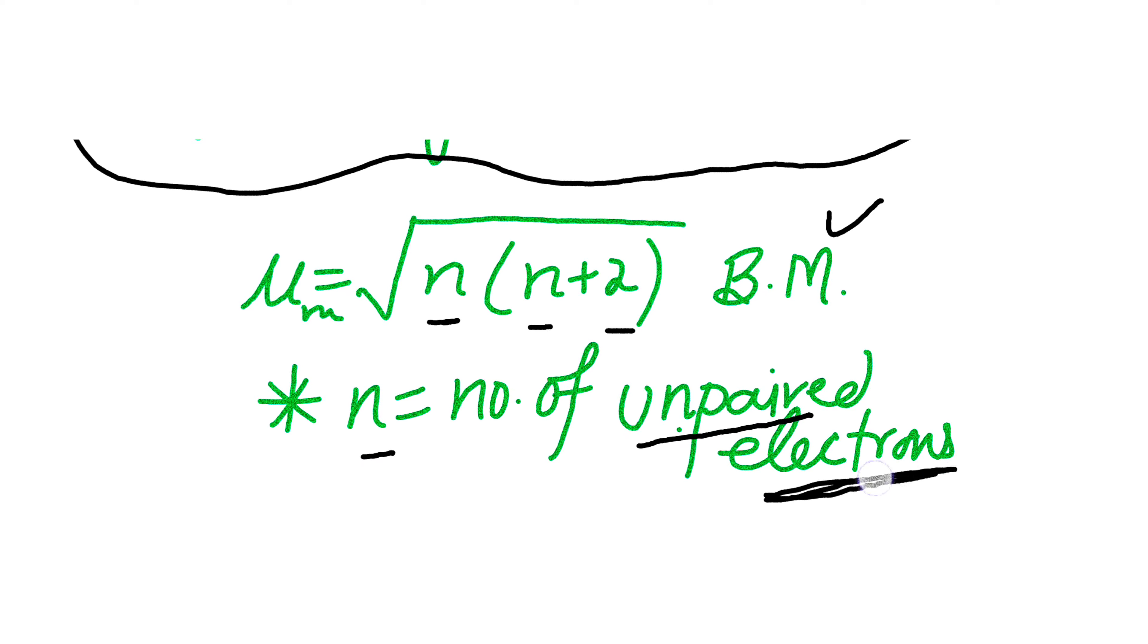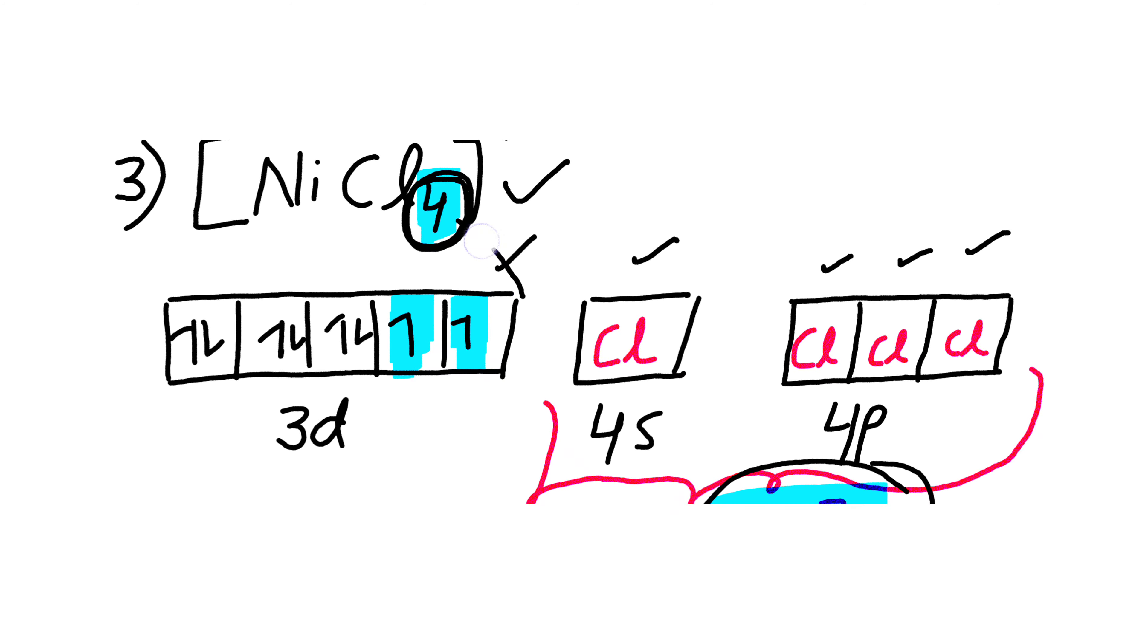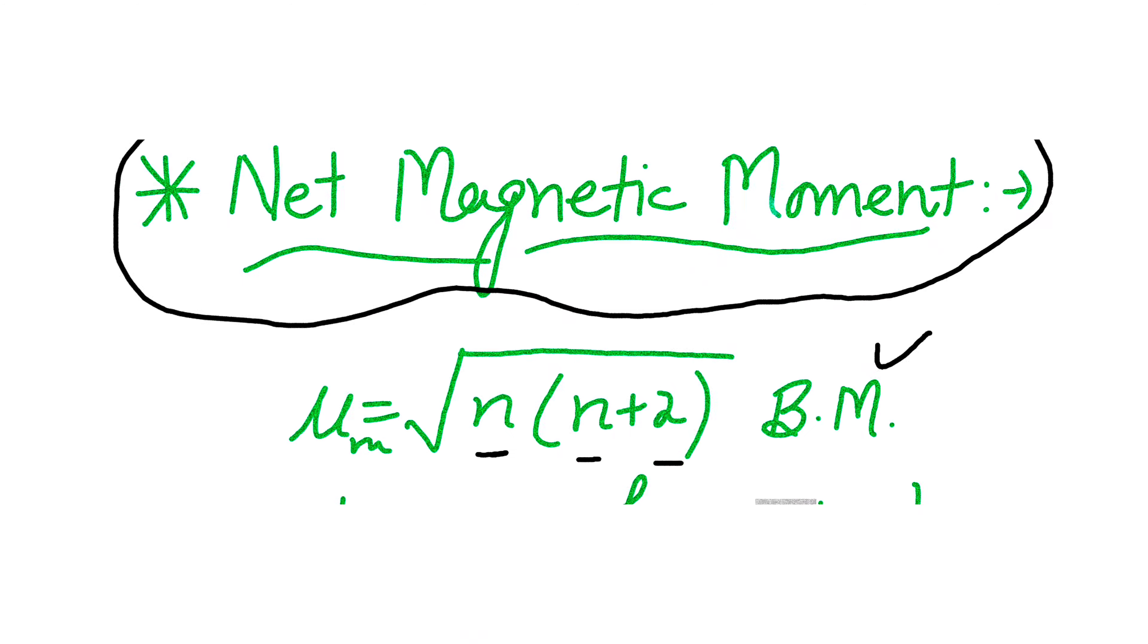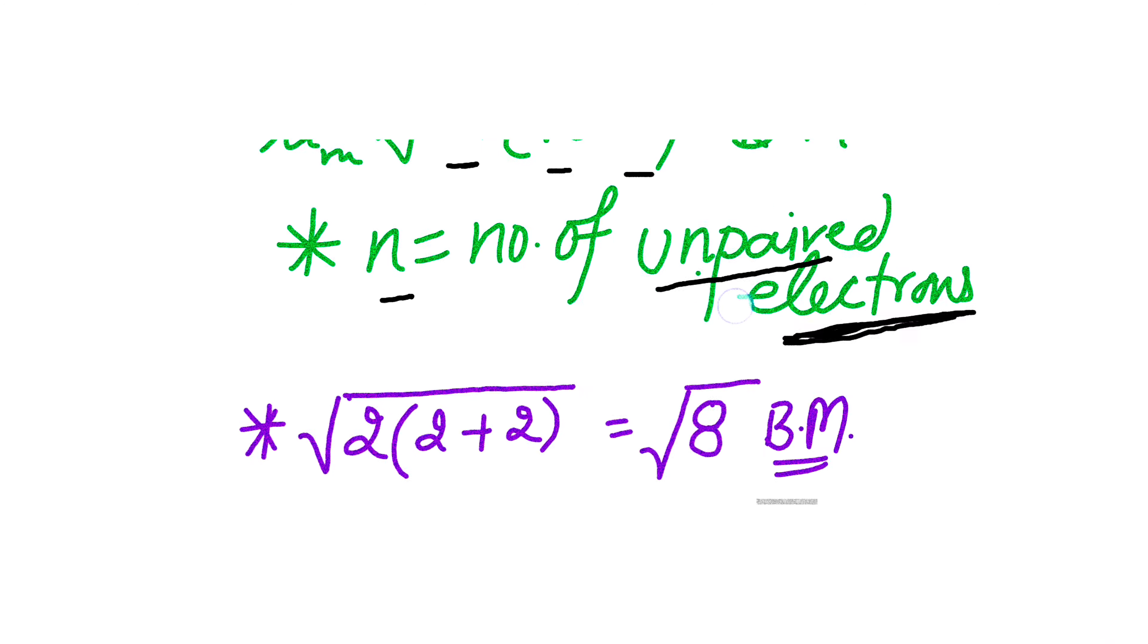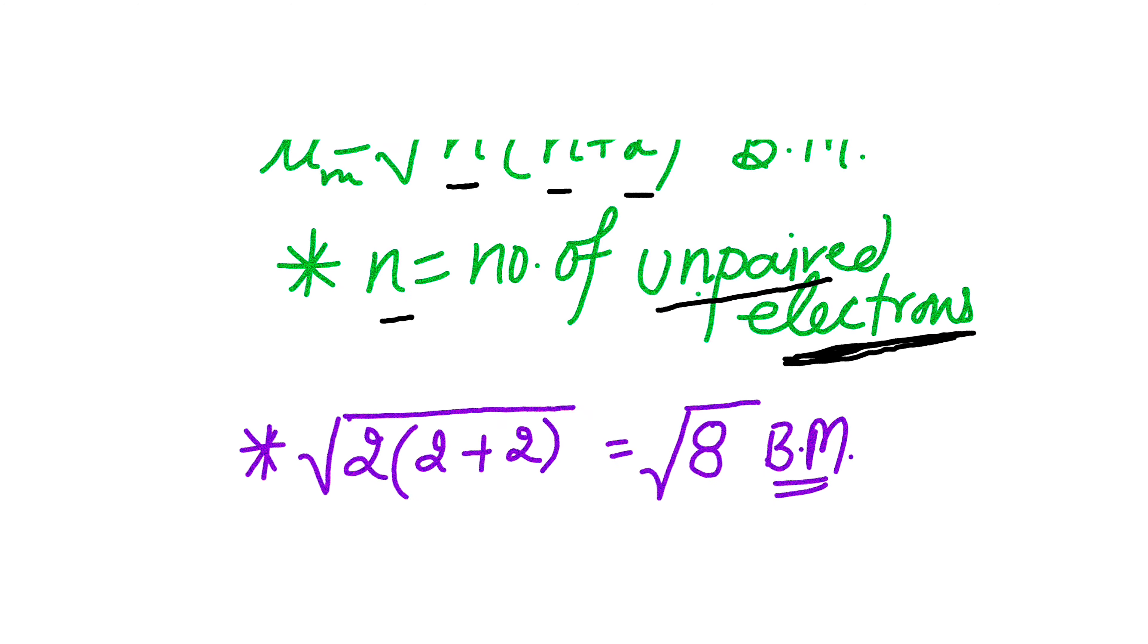Let's see how many unpaired electrons are present in the complex. We can see there are two unpaired electrons present. So the value of n in this case will be equal to 2. It becomes under root of 2(2+2) Bohr magneton.